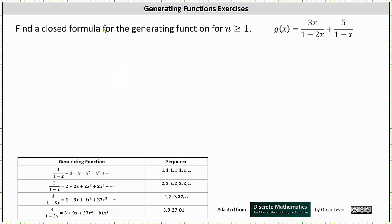To determine the closed formula for the generating function, we'll first determine the sequence for 3x divided by the quantity 1 minus 2x, then determine the sequence for 5 divided by the quantity 1 minus x, and then determine a formula for the sum of the two sequences.